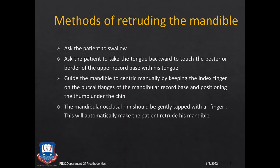The various methods of retracting the mandible so it can be brought to the Centric Relationship position — which is a bone-to-bone position, whereas Centric Occlusion is a tooth-to-tooth position — are as follows. First is the physiologic method, where the patient is asked to repeatedly swallow. Second, the patient is asked to fold the tip of the tongue backwards towards the junction of the hard and soft palate. Third, manually guide the mandible to centric by keeping the index finger on the buccal flanges of the mandibular record base and the thumb over the chin, gently guiding the mandible in a posterior and superior direction.